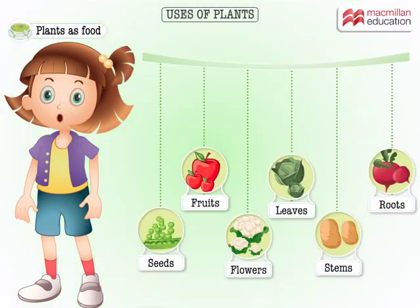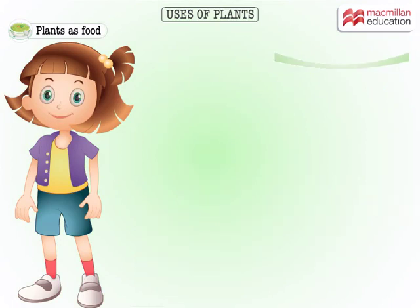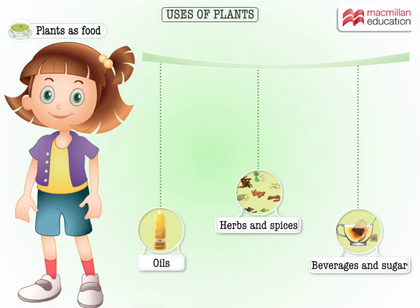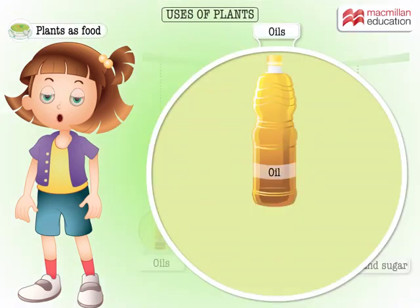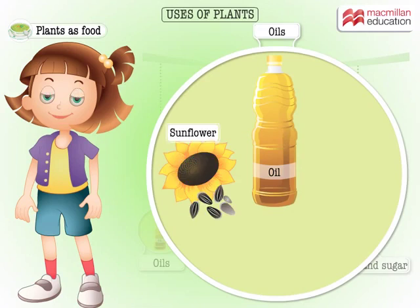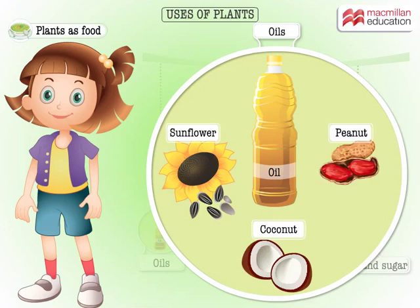Amused already? Then look at all the other plant products you take in. Oil is essential for cooking. We get oil from different seeds and nuts such as sunflower, coconut, and peanut.